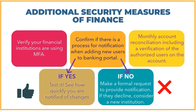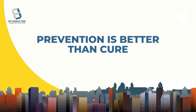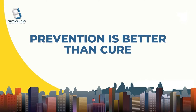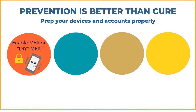Moving along to compliance — this is just making sure that the security measures you have in place are effective and working. Prevention is better than cure, so you want to properly prep your devices and accounts. You can do this first by enabling MFA — multi-factor authentication, sometimes referred to as two-factor authentication — which combines something that you know, your password, with something that you possess, a one-time passcode. This could be sent via text message, email, or phone call. You can also DIY MFA — like sending that dollar transaction before the full amount to make sure money is being delivered to the proper person.